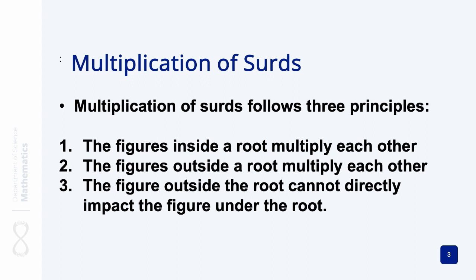We're going to start off with the multiplication of surds. Multiplication of surds follows three principles. The first is that the figures inside a root multiply each other. Principle two: the figures outside a root multiply each other. The third principle is that the figure outside the root cannot directly impact the figure under the root.